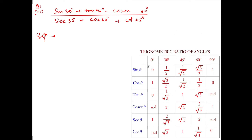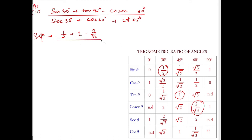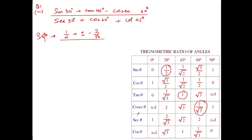Sine of 30 — sine is here, 30 is here, so sine of 30 is 1/2. Write down 1/2. Plus tan of 45 — tan is here, 45 is here, tan of 45 is 1. Minus cosec of 60 — cosec is here, 60 is here, so it is 2 by root 3. Sec of 30 is 2 by root 3. Cos of 60 is 1/2. Cos of 45 is 1.